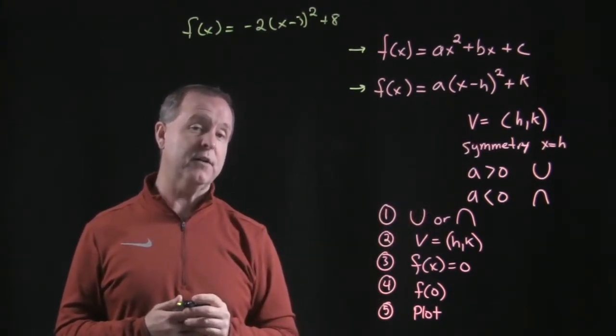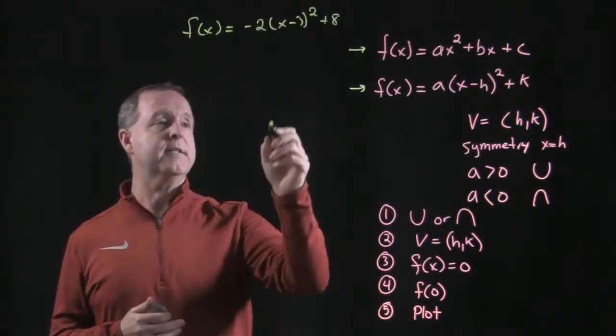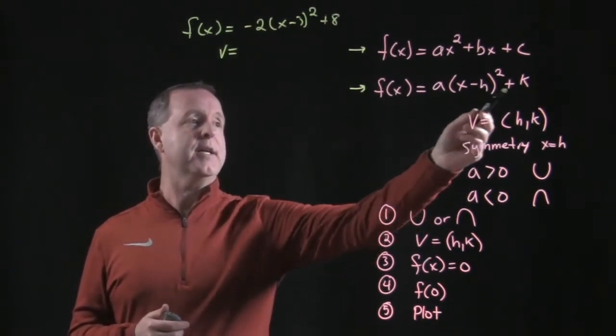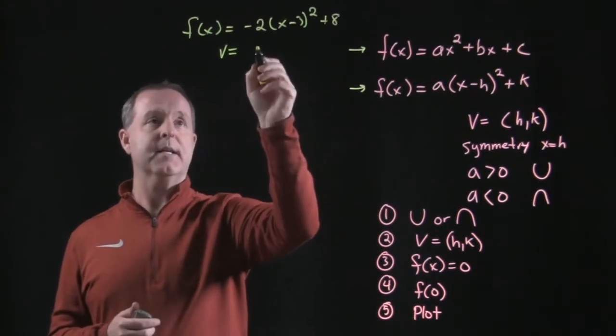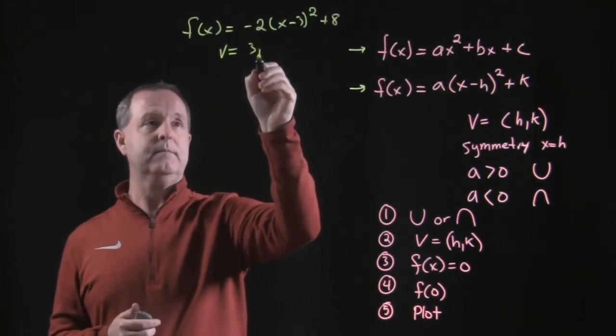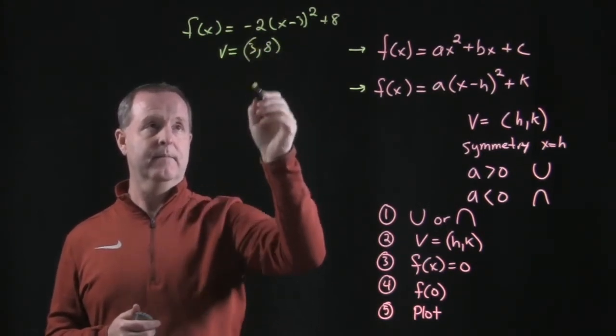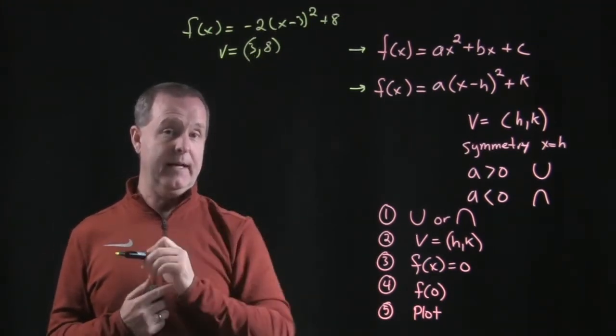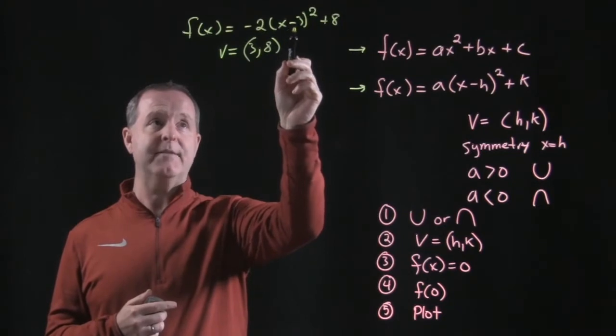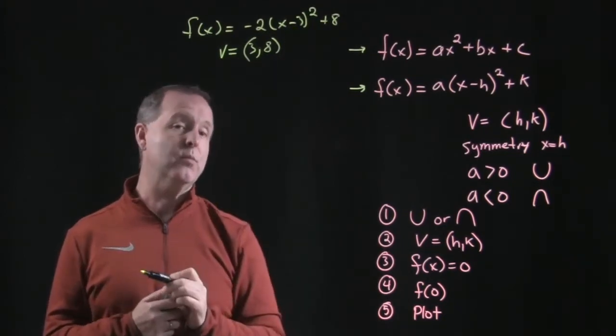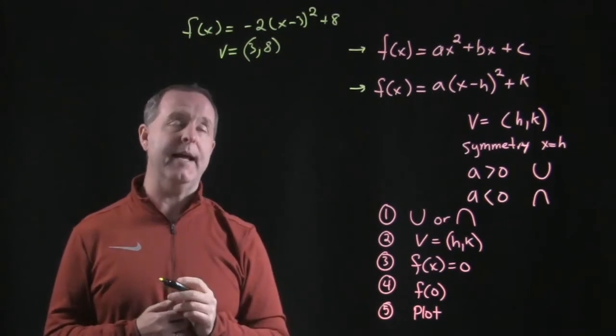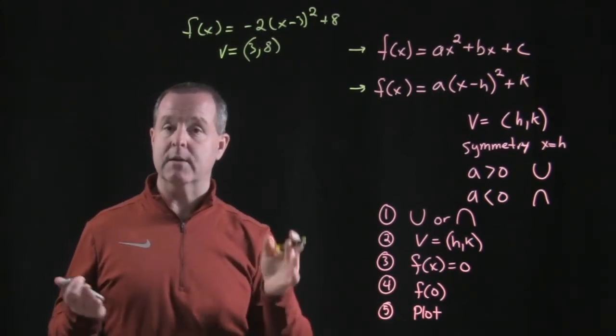First of all, let's try to identify its vertex. Its vertex is going to be at the point h and k. h in this particular case is a 3 and k is an 8. Now notice that my vertex is not a negative 3 because the form tells me I have to have it in a negative position to begin with. So my h is specifically the 3 and the 8 is a k. Alright, so now I have a vertex.